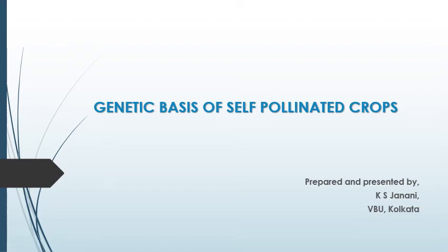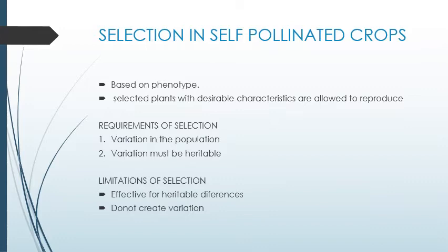Hello everyone, today we are going to see the topic: genetic basis of self-pollinated crops. Selection in self-pollinated crops is mainly based on the phenotypical character, and the selected plants with desired characteristics are allowed to reproduce. The definition of selection is: selection is a process of selecting a desired plant from